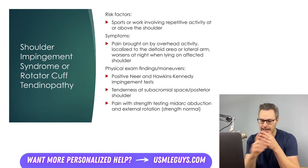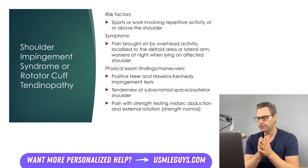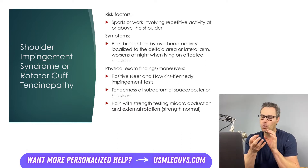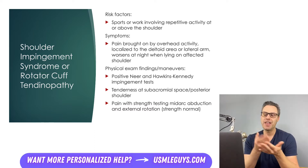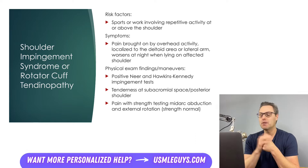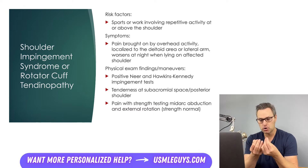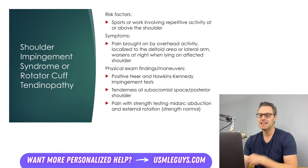Impingement tests that will be positive include the Neer and the Hawkins-Kennedy impingement test. The Hawkins-Kennedy test involves putting the patient in 90 degrees of shoulder flexion and 90 degrees of elbow flexion, then internally rotating the arm — if the patient reports pain, that's a positive test. The Neer impingement test involves stabilizing the patient's scapula with one hand and then flexing the arm while internally rotating it; if this causes pain, the Neer test is positive.